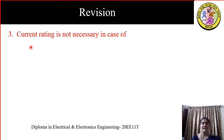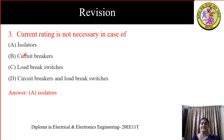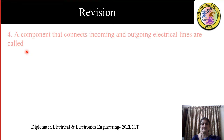The next question is: current rating is not necessary in the case of — A) isolator, B) circuit breaker, C) load brake switch, D) circuit breaker and load brake switch. We know that an isolator is a no-load switch and no current flows through it. So a current rating is not required, either to make or to break. The answer is A, isolators.